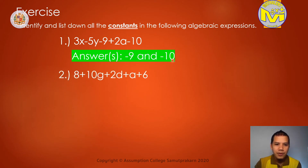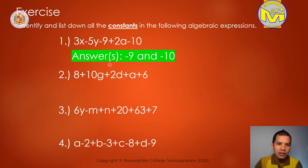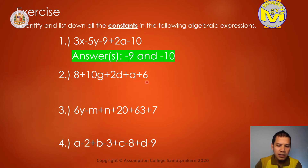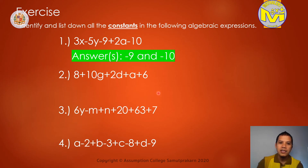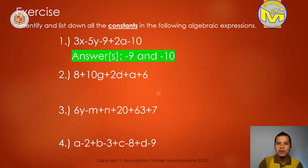So the answer here is negative 9 and negative 10. Number 2 — you will answer numbers 2, 3, and 4 by yourself. I gave you already the answer in number 1. So in number 2, which are the constants? Identify them. We have 8 plus 10g plus 2d plus 8 plus 6. How many constants can you see or identify? I think we have only 2 constants in this expression.